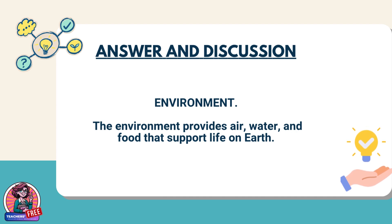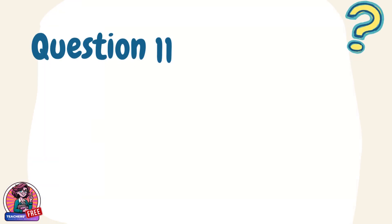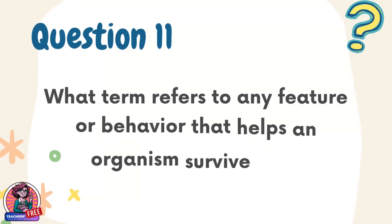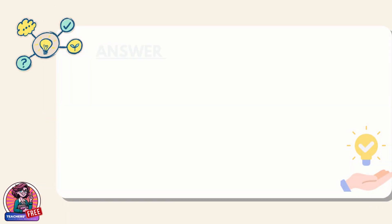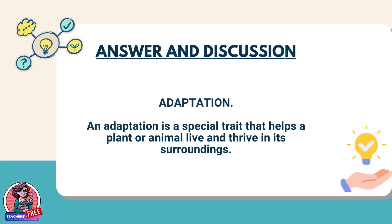Question 11. What term refers to any feature or behavior that helps an organism survive in its environment? Answer: Adaptation. An adaptation is a special trait that helps a plant or animal live and thrive in its surroundings.